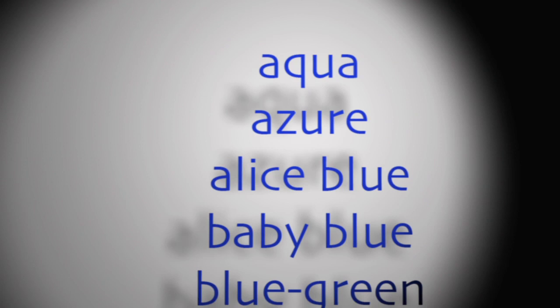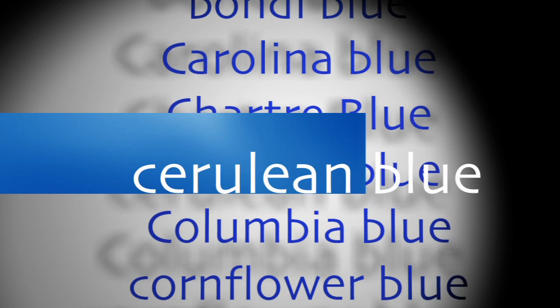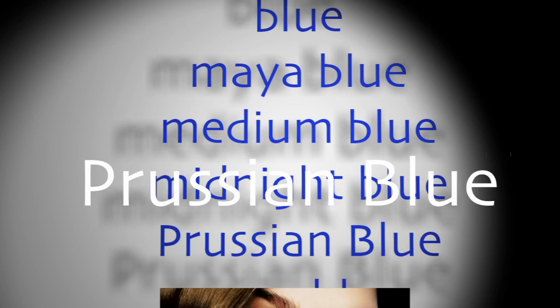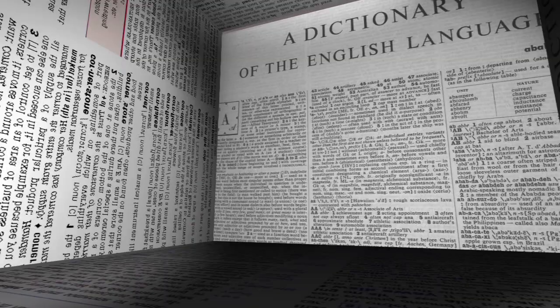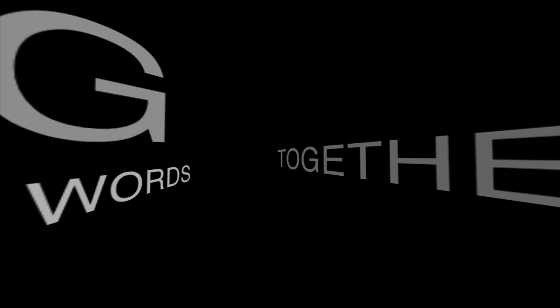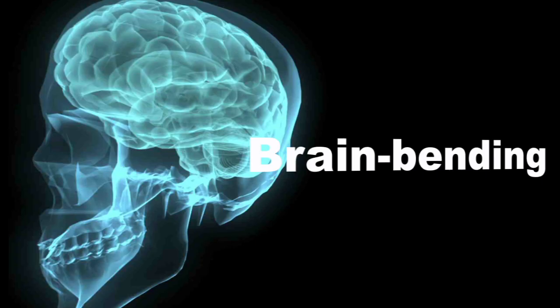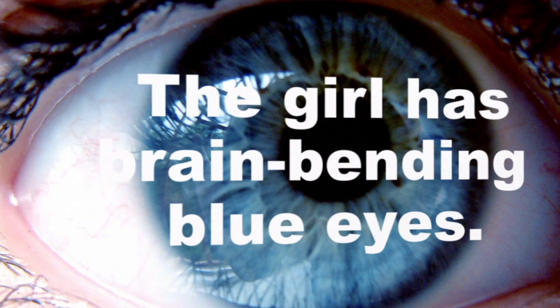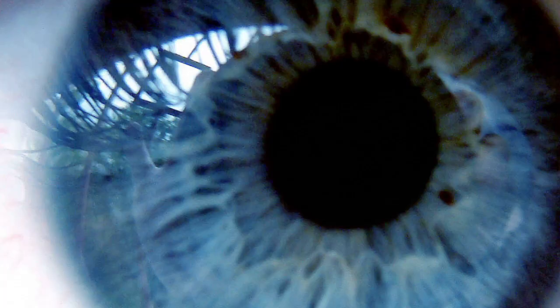There's a difference between saying 'blue' and a specific kind of blue like indigo. Here's a whole list of blues that painters use: cerulean — if you look straight overhead on a clear day, that's that color. Cobalt is a different kind you see in antique glass. So if you write 'the girl has Prussian blue eyes,' a painter would say, 'Oh yeah, I know exactly that color.' You can mix colors in painting, and you can do that with language too by adding words together. 'Brain-bending' isn't in the dictionary, but 'the girl has brain-bending blue eyes' gives a better idea than just 'blue eyes.'